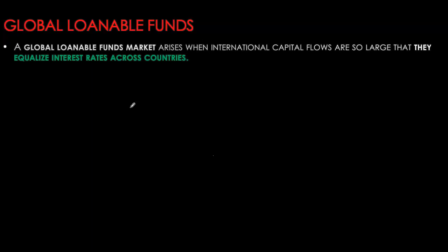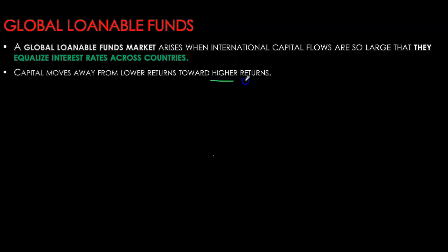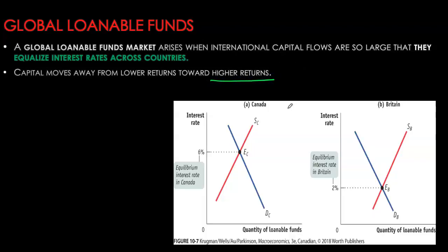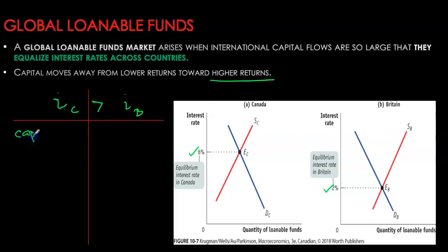We're going to expand the analysis to include the effect of global capital flows across different economies, assuming no restrictions on capital flows so capital flows freely. The main determinant affecting capital flow is the return capital receives — whichever economy offers a higher interest rate will attract capital. In this diagram, we have two loanable funds markets, one for Canada and one for Britain, each with its own demand and supply. We start with the initial interest rate in Canada much higher than in Britain. Once global capital flows freely, savers in Britain would rather save in Canada, so we see capital inflow for Canada.